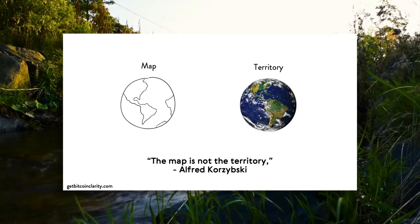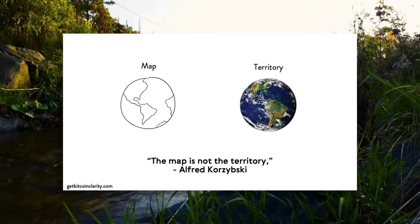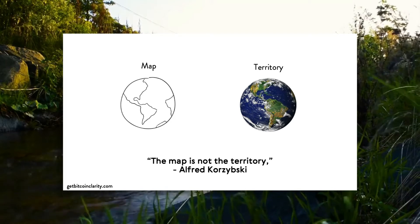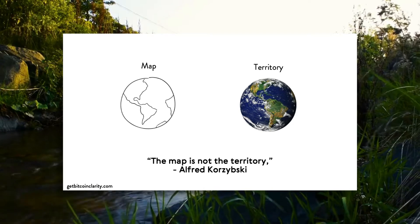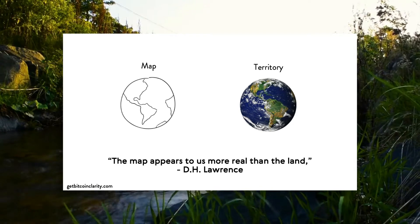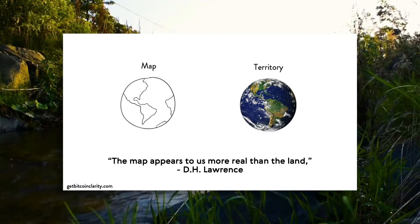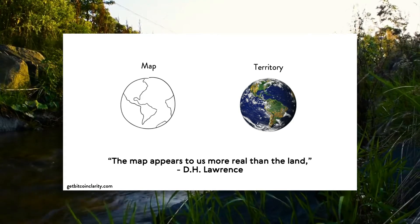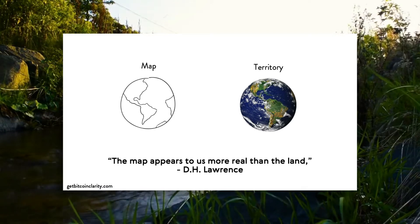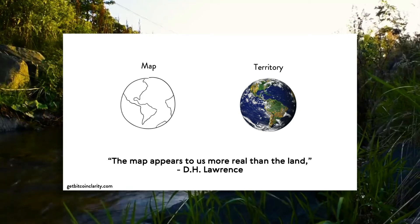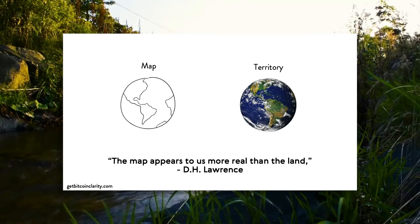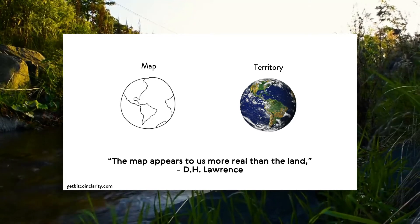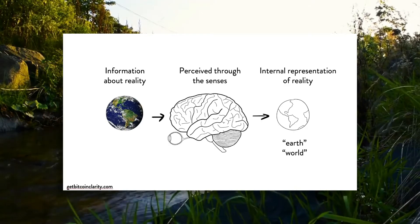The map is not the territory — a quote by Alfred Korzybski. What he argued was that human knowledge of the world is limited by both the human nervous system and the languages we've developed, so no one actually has direct access to reality — it's always filtered by our senses and our language. DH Lawrence said 'the map appears more real than the land.' What he meant was that our mental models and the way we internally think about the world feels more real to us than the actual reality we're interacting with.